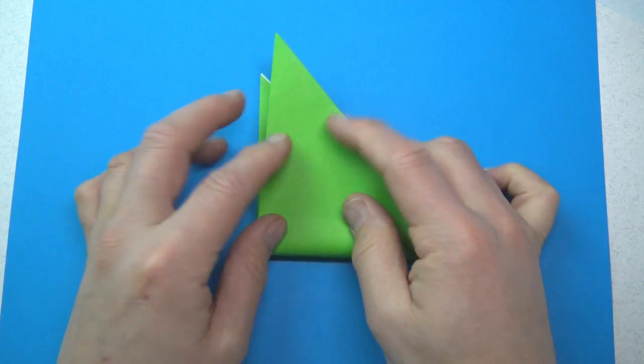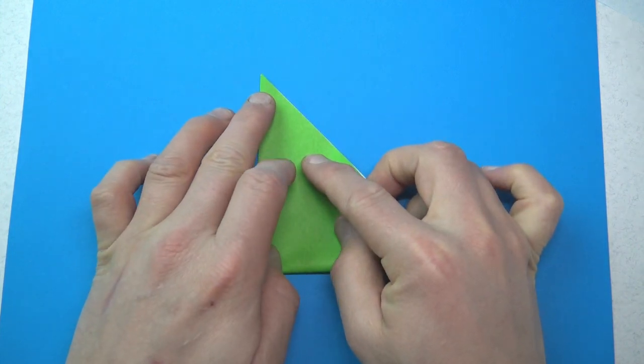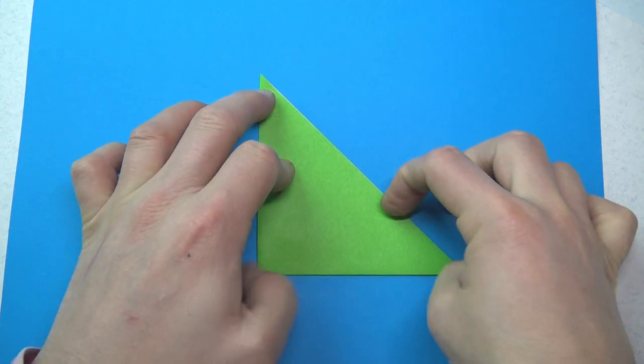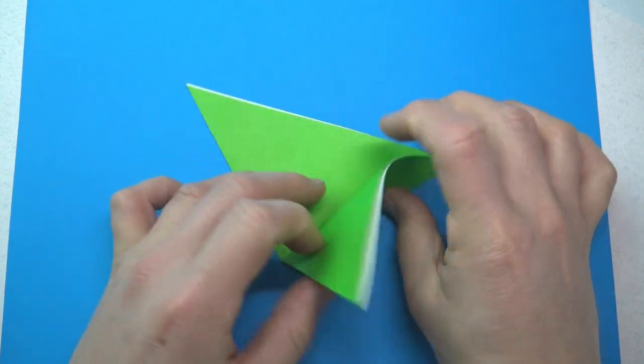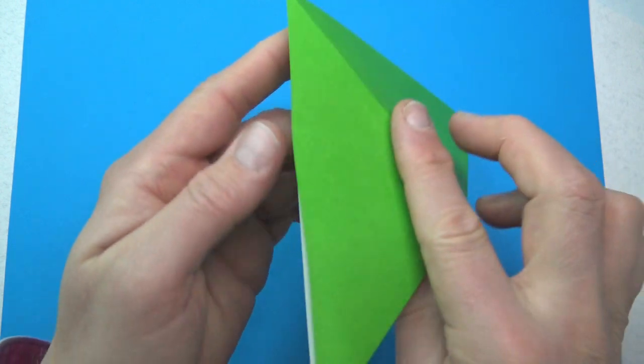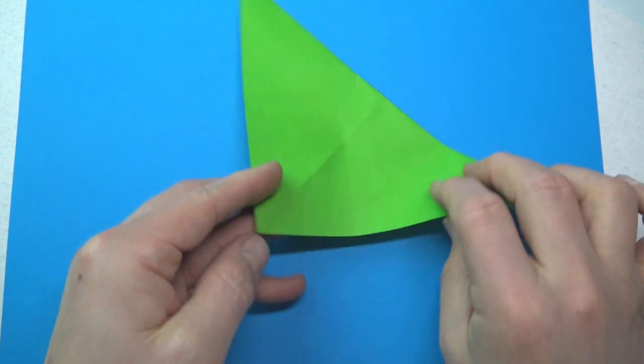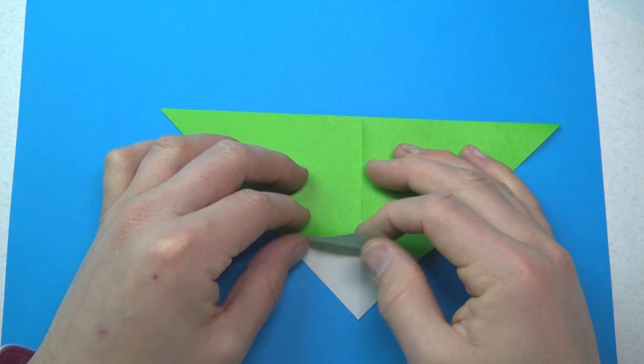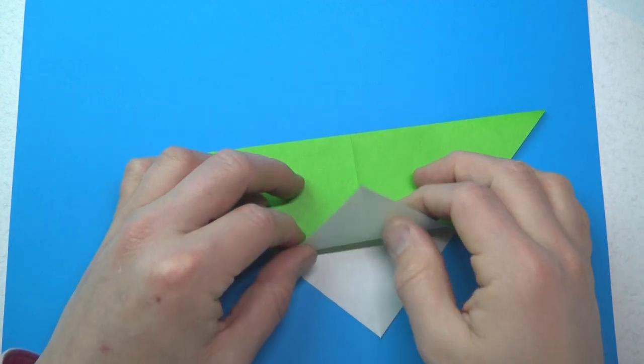And fold in half in this direction. And unfold. Now we're going to be turning over just about every step. Starting now. Turn over and rotate. And we're going to fold this flap up to here, but we're just making a pinch mark.